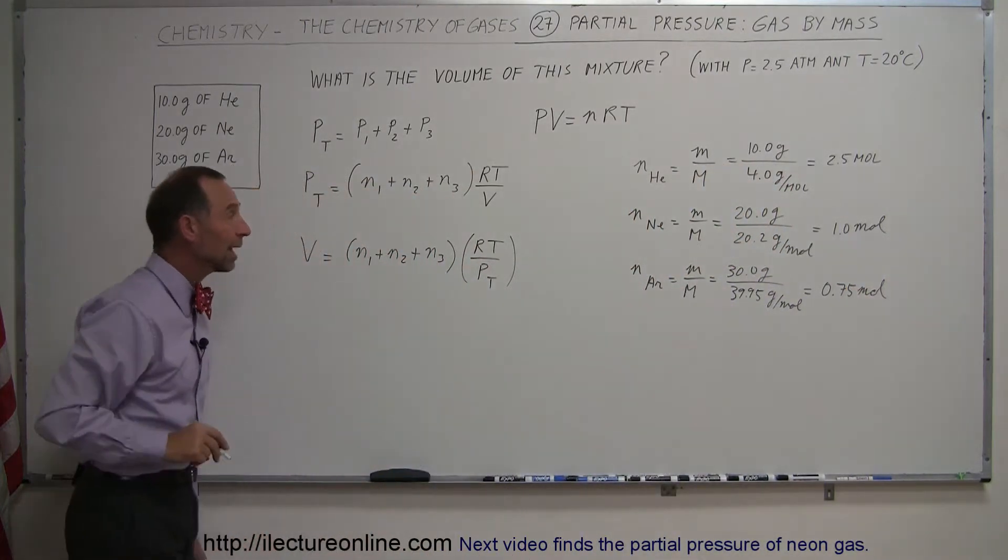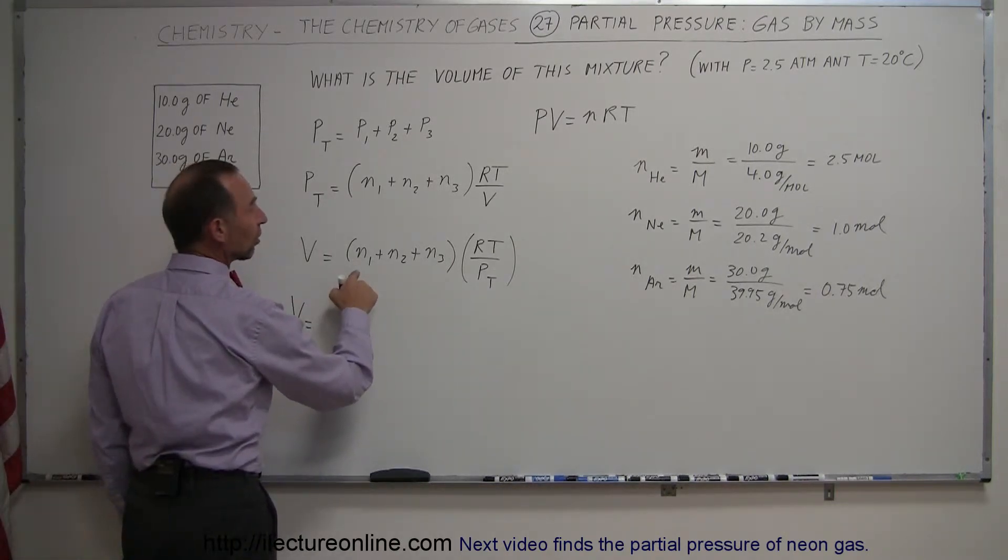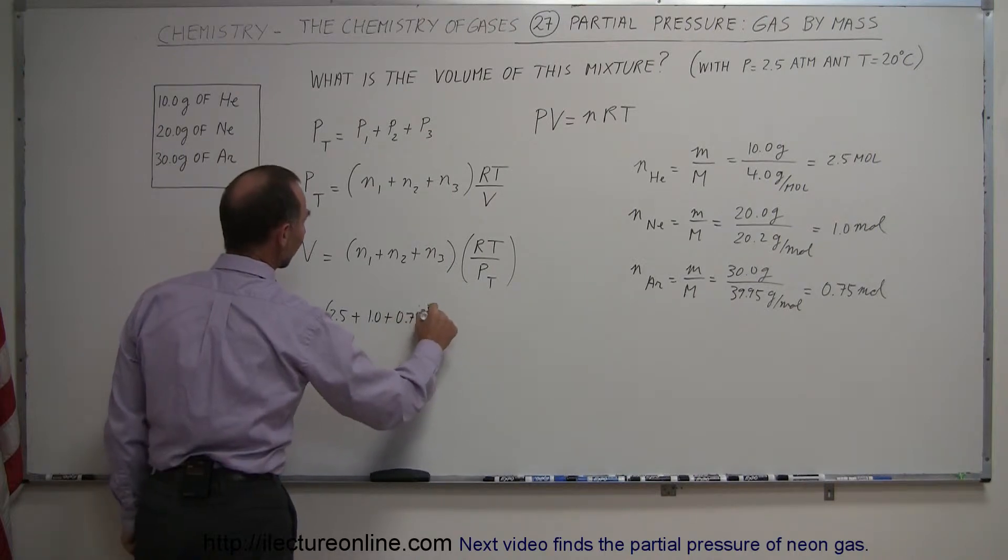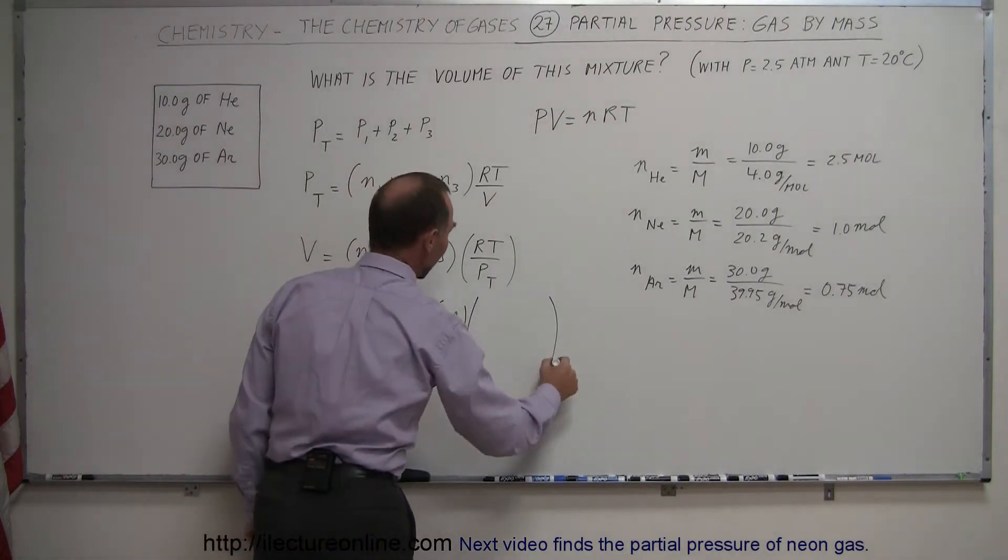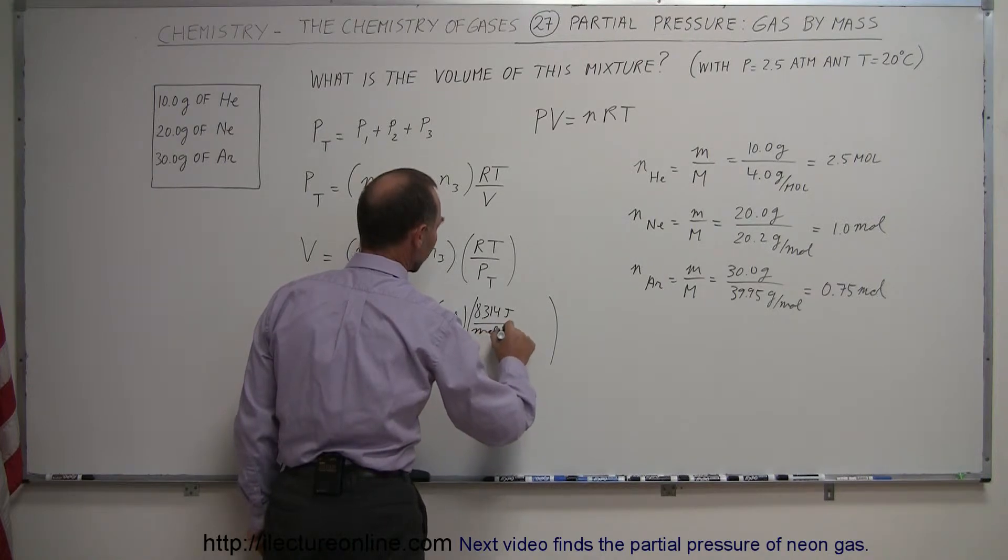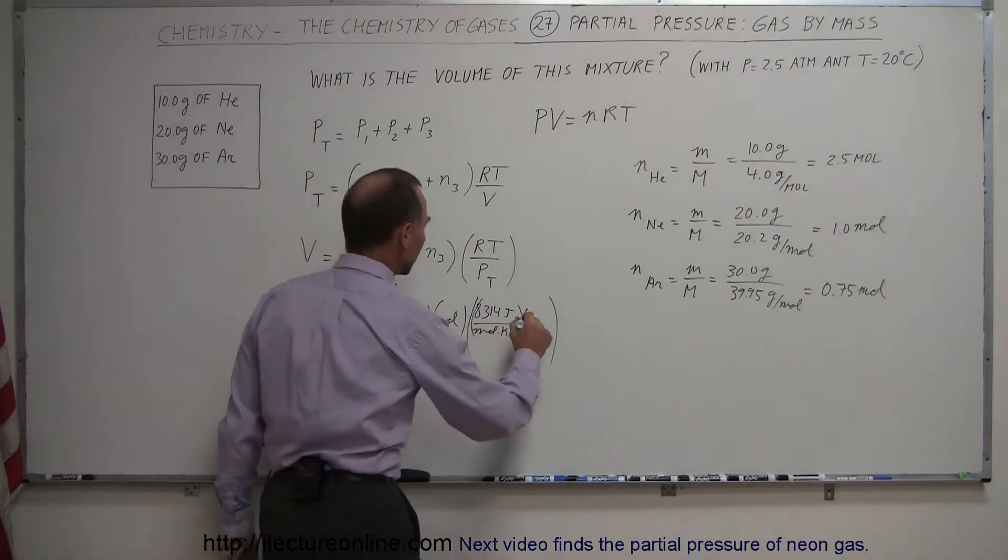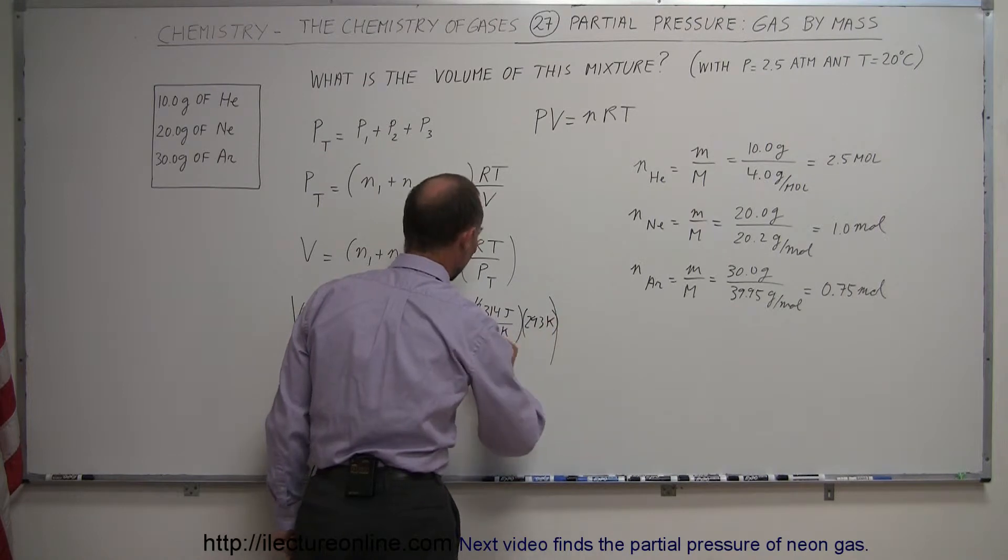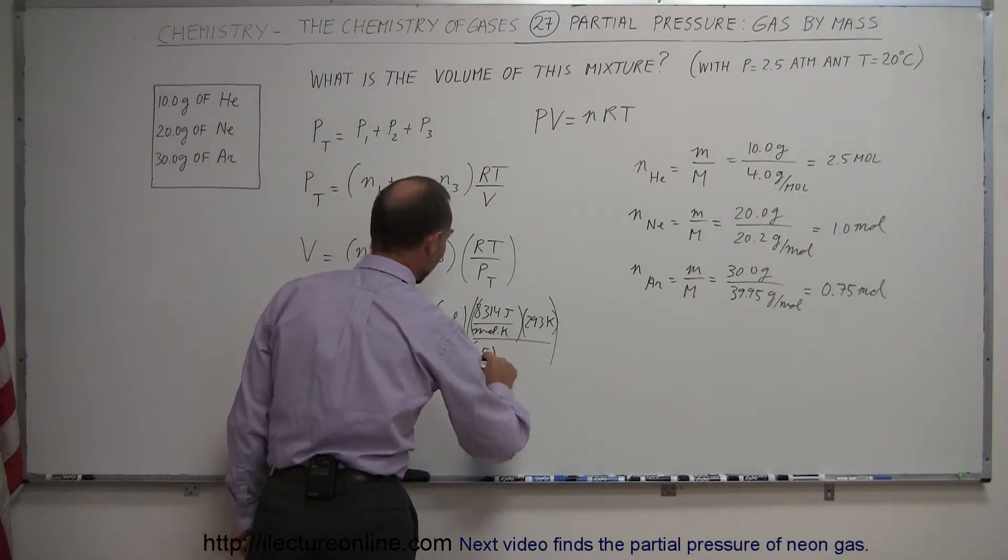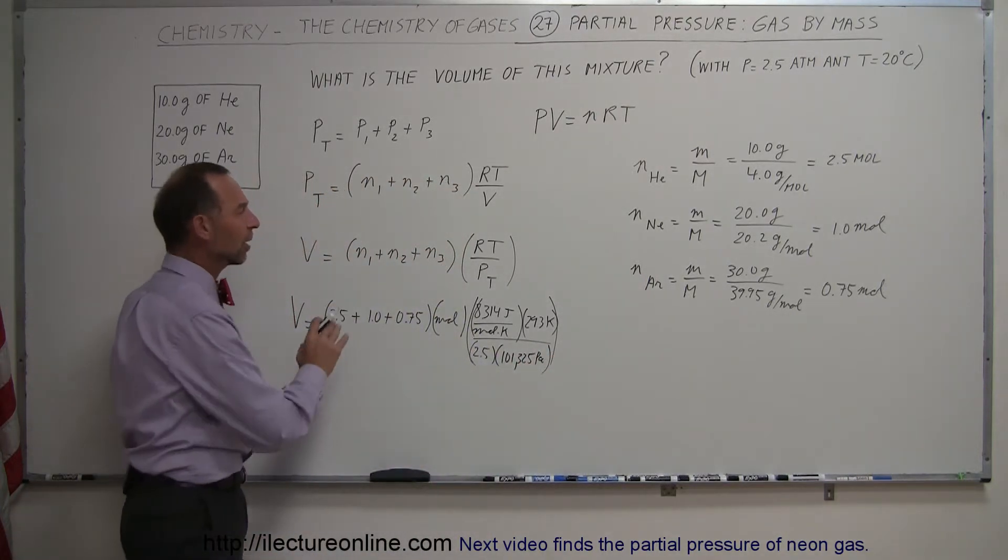Now we have the number of moles of each of the three gases making up our mixture, so we can plug that into our equation. The volume equals the sum of all the moles: 2.5 plus 1.0 plus 0.75 moles, multiplied by the gas constant 8.314 joules per mole Kelvin, times the temperature. They told us 20 degrees Celsius, add 273 to that, that's 293 Kelvin, divided by the total pressure. They told us it was 2.5 atm, so it's 2.5 times 101,325 pascals. We could have used a different constant.